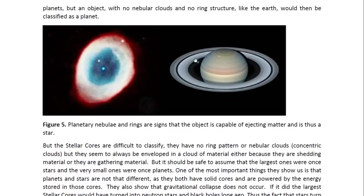Here we see Saturn. It produces a ring pattern, which means it is able to eject matter outwards away from its atmosphere, and is therefore a star — a small star, because the ring pattern is very small. In the case of the sun, the sun's nebular clouds go out to beyond Jupiter, which means the sun is a very powerful star. But Saturn is a small star and produces a ring pattern very close to its atmosphere.